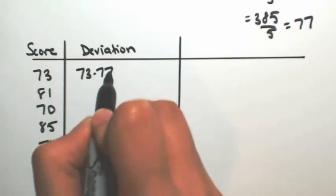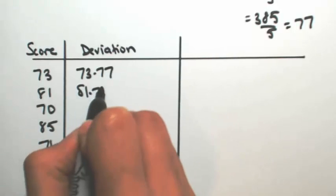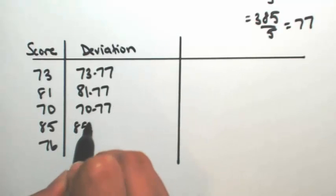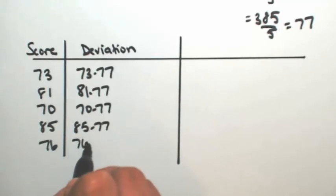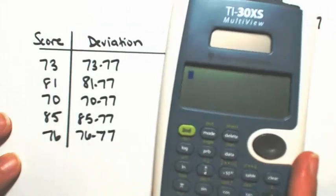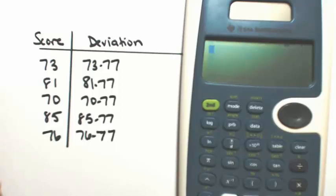So 73 minus 77, 81 minus 77, and so on. We're just figuring out how we deviate from the mean.